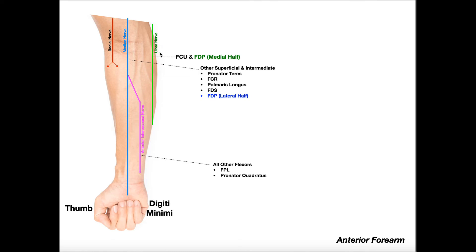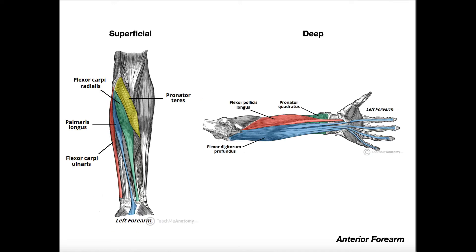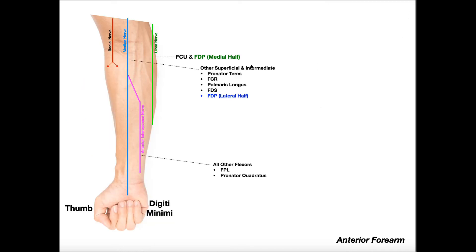With the exception of flexor carpi ulnaris, all the other muscles in the superficial and intermediate layers are innervated by the median nerve. So if we exclude FCU, we're left with pronator teres, flexor carpi radialis, palmaris longus, and also the intermediate layer muscle — flexor digitorum superficialis — all innervated by the median nerve.